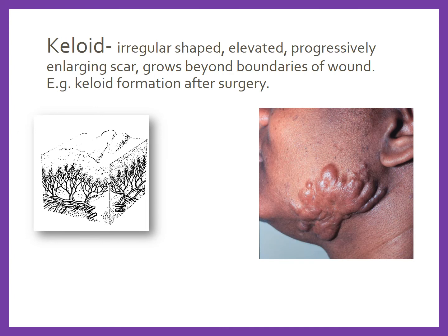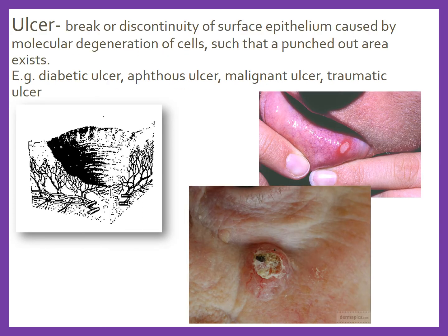A keloid is an irregular shaped, elevated or progressively enlarging scar that grows beyond the boundaries of the wound — shown here after surgery of the maxillofacial area. An ulcer is a break or discontinuity of the surface epithelium caused by molecular degeneration of cells, such that a punched-out area exists. Examples on the skin include diabetic, traumatic, or malignant ulcers; aphthous ulcers are seen almost exclusively in the oral mucosa.